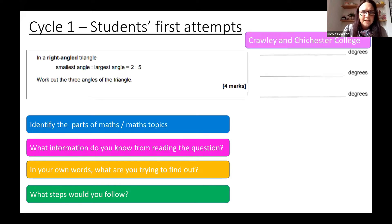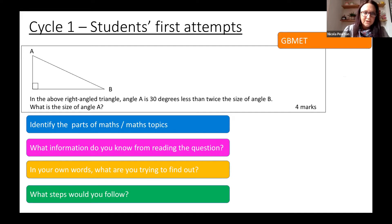We used two different questions across the colleges just because of where we were in our schemes of work. This is one question used by Crawley and Chichester College for Cycle 1. They were given the ratio, and the trick here was to realize that the biggest angle, which was 5 parts in the ratio, was the right angle. The Greater Brighton students did this question, which required them to make an equation with the three angles in the triangle and then solve it.